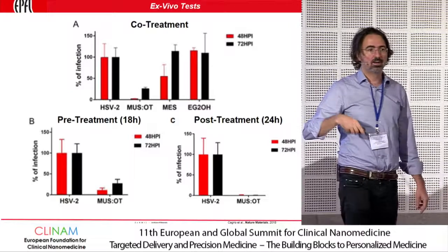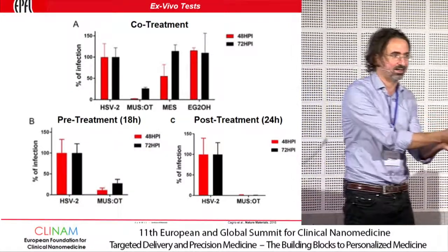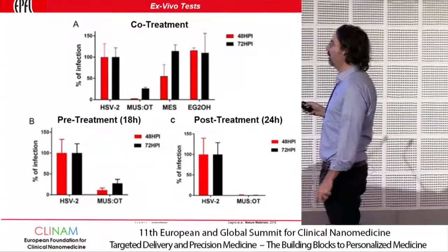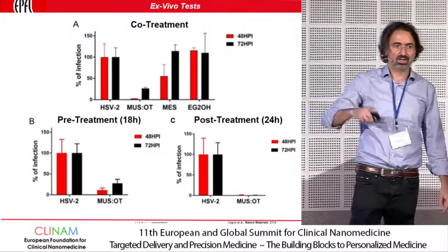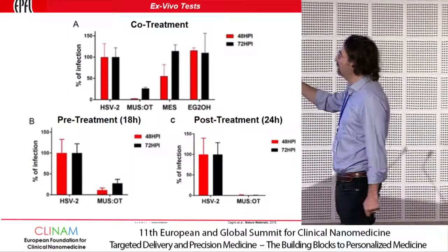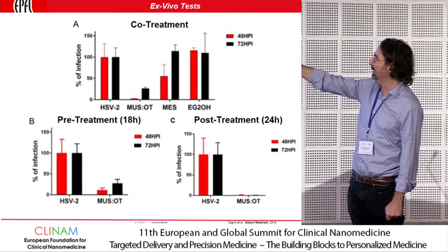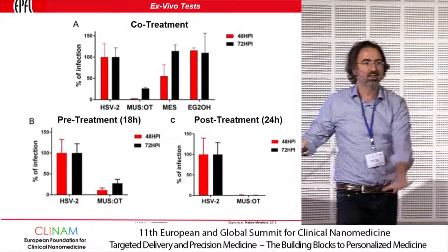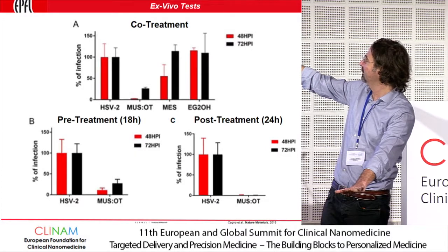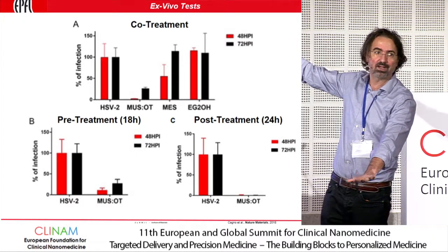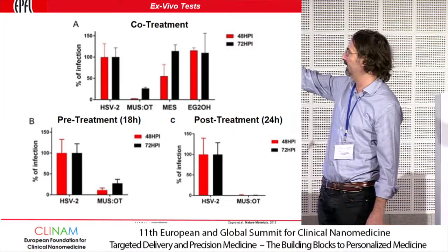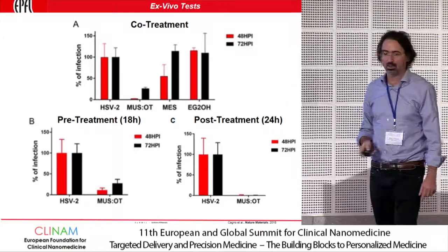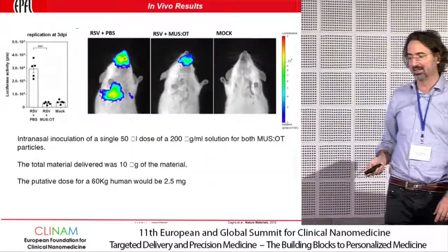Moving to ex vivo results — tissue from patients regrown at the air-liquid interface — if tissue infected by herpes simplex virus 2 is treated with the short-ligand nanoparticle at time zero, the infection is cleared, but after two days half the infection returns and by three days the full infection is back. With our nanoparticle, after two days nothing returns, and only a little is back at three days. In post-treatment conditions we get complete protection even after three days.